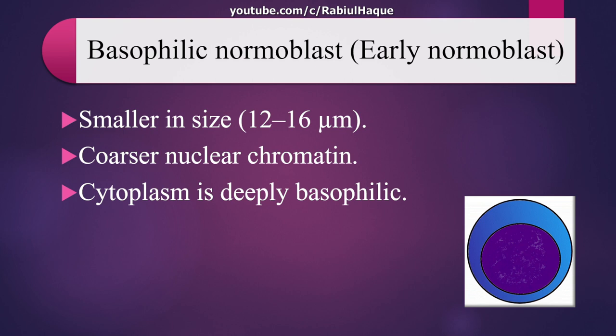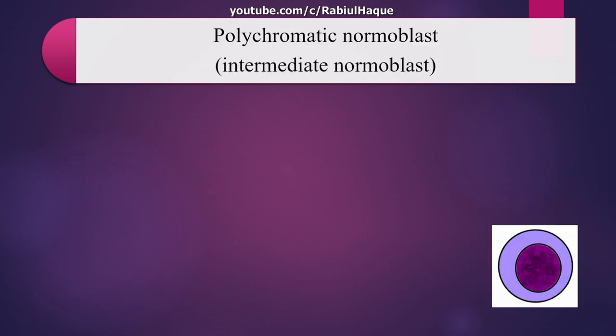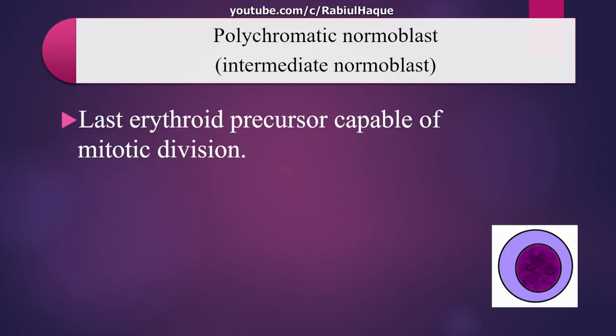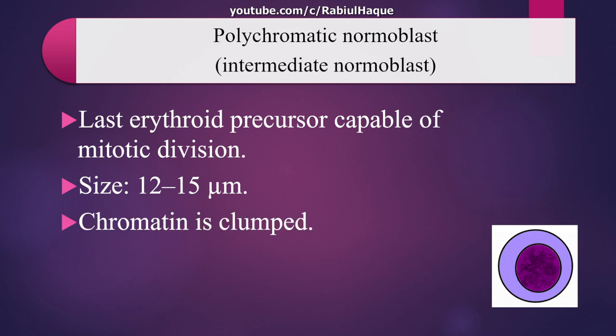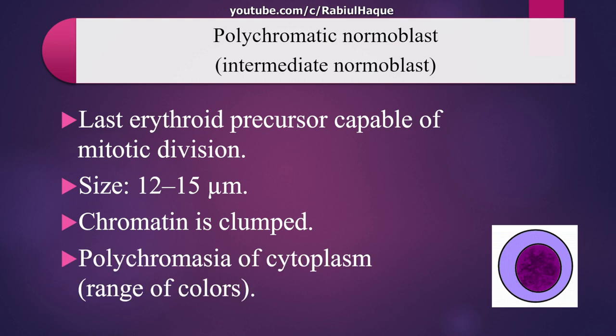The next stage is known as intermediate normoblast. The size is 12 to 15 micrometers. Here we will see chromatin clumping, and as you can see in the image, the cytoplasm will begin to show polychromasia — no longer purely bluish.